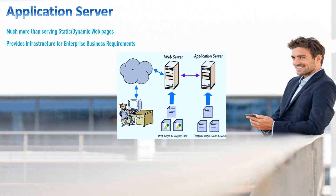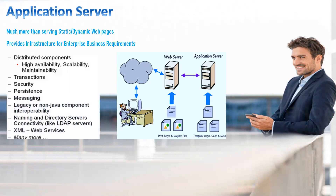An application server is mandatory to support enterprise business applications. We need enterprise business applications because of requirements like high availability, scalability, maintainability, transactions, security, persistence, messaging, legacy or non-Java component interoperability, LDAP servers, XML, and web services. For example, a website like Facebook has millions of users accessing it across the world at the same time — you have to maintain performance, availability, and scalability. If today you have 1 million users and tomorrow it could be 1.5 or 2 million, you have to make your system scalable.